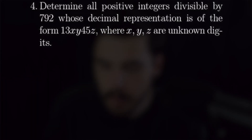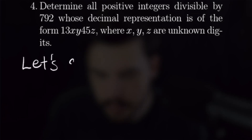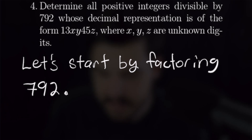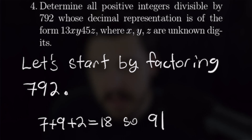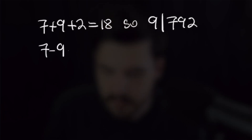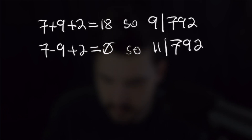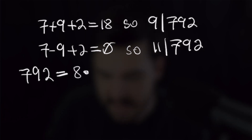For problem four, we want to find all positive integers divisible by 792 whose decimal representation is of the form 13xy45z, where x, y, and z are unknown digits. We start by factoring 792. The digit sum of 792 is 7 + 9 + 2 = 18, so 9 divides 792. The alternating sum is 7 − 9 + 2 = 0, so 11 divides 792. Dividing out, we find 792 = 8 × 9 × 11.